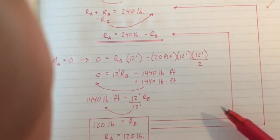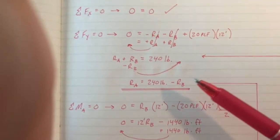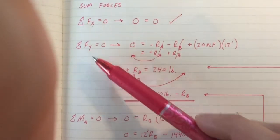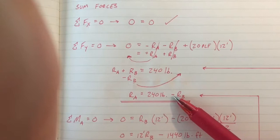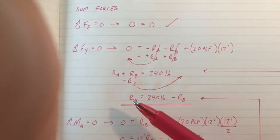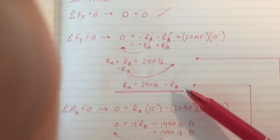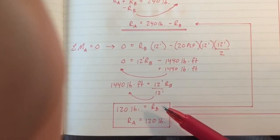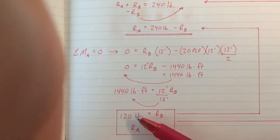If we remember our other equation back in the summation of forces in the Y direction, we never finished it. We needed an additional value, whether that be RA or RB. In summation of moments, we were able to solve for RB equaling 120 pounds.